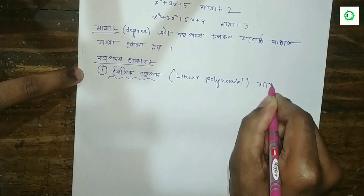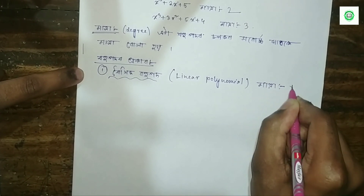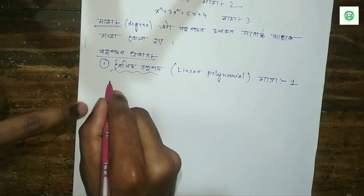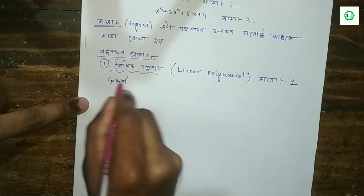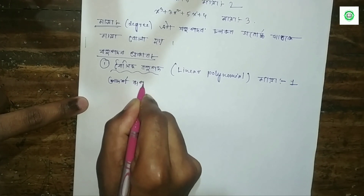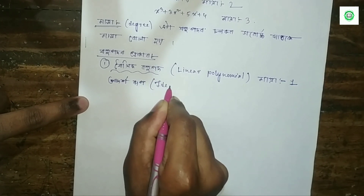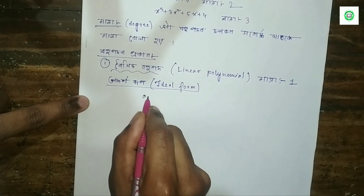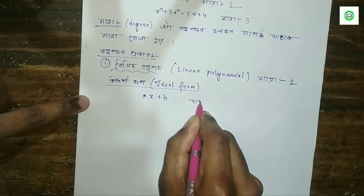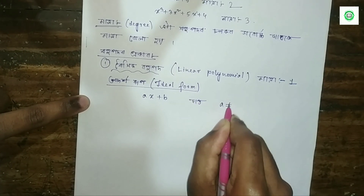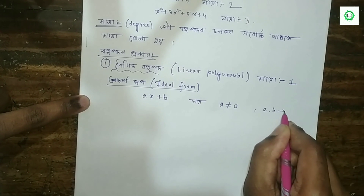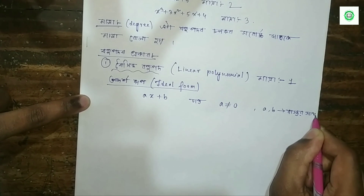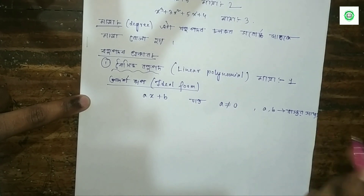I will write a letter. A linear polynomial is of the form ax plus b, where a is not equal to zero. Here a and b are real numbers. Examples include numbers like 2, 1, minus 1, minus 2.